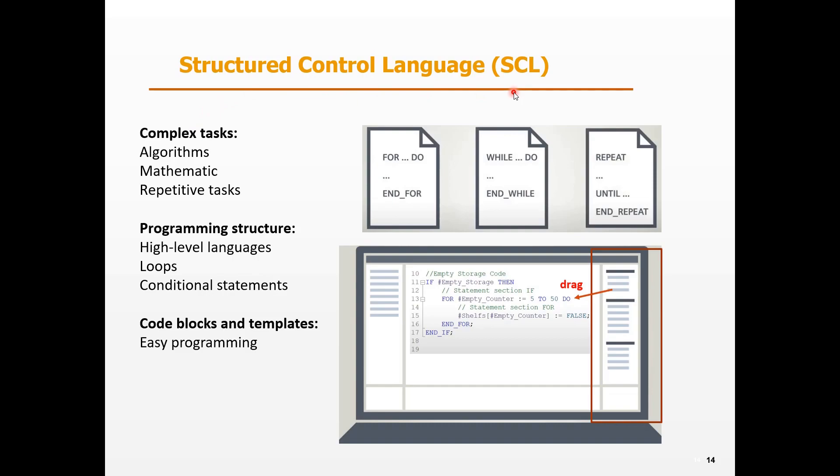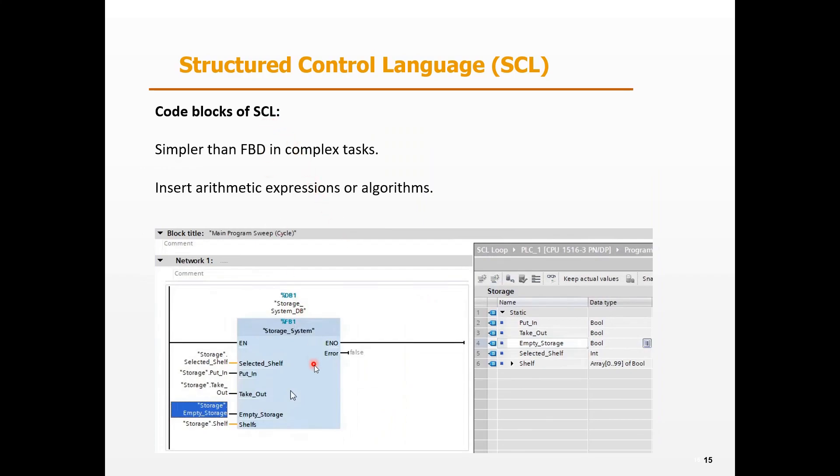SCL is a very powerful tool that can handle complex tasks by utilizing algorithms and mathematical functions along with repetitive tasks. The programming structure is built with high-level language such as program loops or conditional statements. There are many code building blocks and templates. To make programming easier, we can just drag the templates to the code. The code blocks of SCL are simpler than the FBD in complex tasks. We can also insert arithmetic expressions or algorithms in a block. That can be more clearly arranged in SCL.